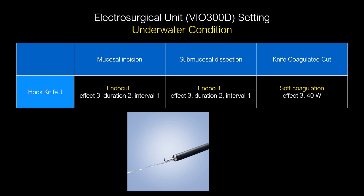Therefore, unlike the dual knife-J, the end-cut mode is suitable for mucosal incision and submucosal resection. Because the coagulation power of the end-cut mode is weak, dissection of the submucosal layer with vessels easily leads to bleeding. In this situation, pre-coagulation is needed using a knife-coagulated cut or hemostatic forceps.